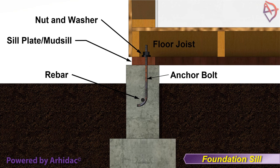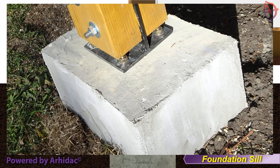Sill plates provide a nailing base for joists or studs resting directly on the foundation. Pressure-treated wood is used for sill plates for its resistance against decay and insects. Other decay or insect-resistant lumber may be used. In residential and other light construction, sill plates are usually 2x4 or 2x6. Heavier buildings may require a 4-inch thick or larger sill plate. Sill plates are fastened to the foundation using anchor bolts or metal connectors, such as mud sill anchors, and also by using heavy-duty concrete screws.